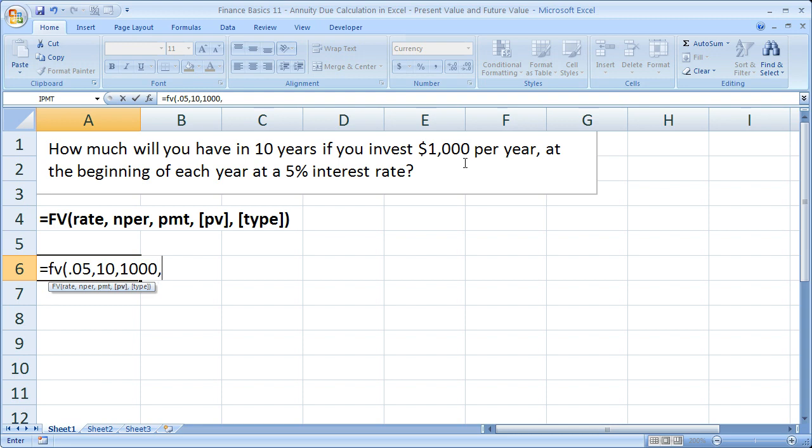Now comma for the present value. You can either put a zero there or simply leave it blank and insert a comma. The comma means we move on to the next argument, which is the type argument.